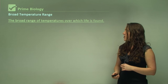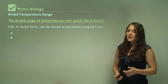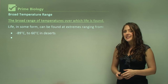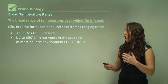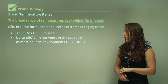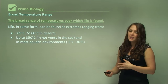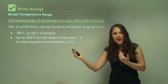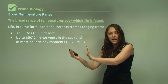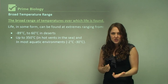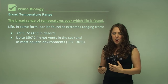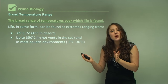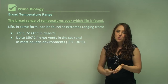Life in some form can be found at extreme temperatures ranging from minus 89°C to 60°C in deserts, up to 350°C in hot thermal vents in the sea, and in most aquatic environments the range is from minus 2°C to 30°C. While this appears to be a wide temperature range, most organisms cannot survive at both extreme ends — each organism survives at one end or the other. Humans are extremely lucky as we can alter our environments through clothing and air conditioning, allowing us to live between roughly 10°C and 40°C.